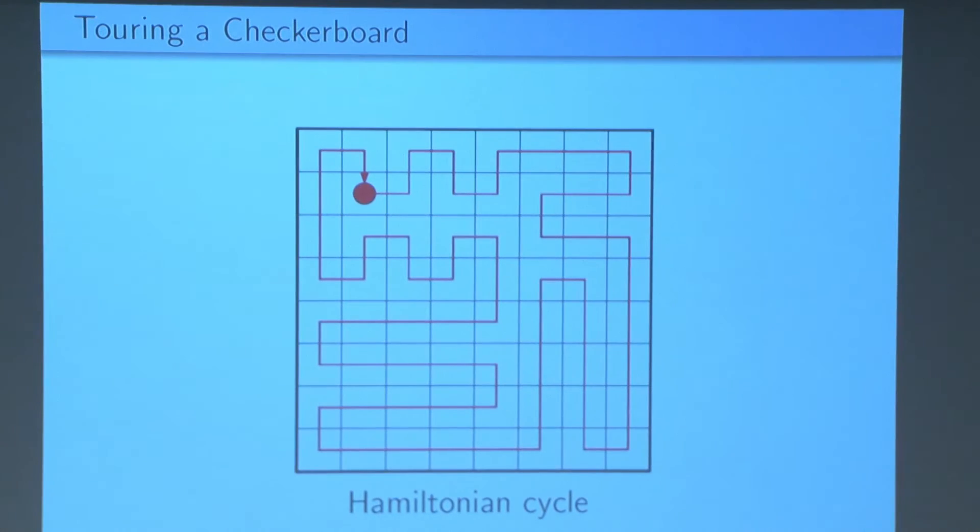Here's an example of a tour of the 8x8 checkerboard. Now another term for a tour is a Hamiltonian cycle, and if a checkerboard has a Hamiltonian cycle, then we can also say that the checkerboard is Hamiltonian. So this means that the 8x8 checkerboard is Hamiltonian.